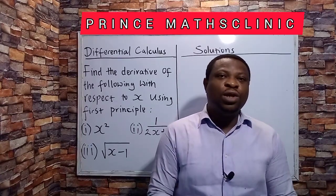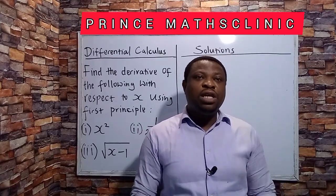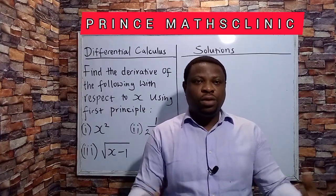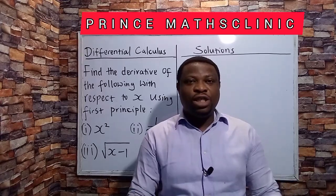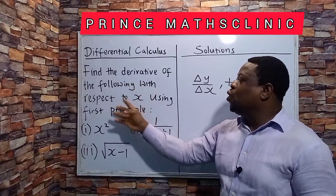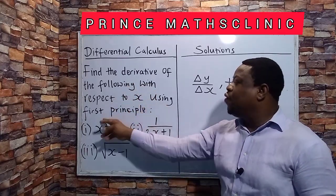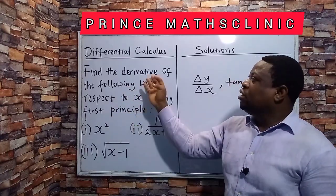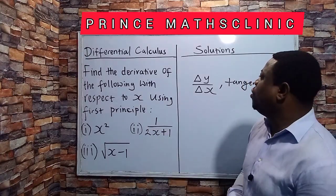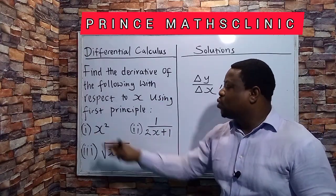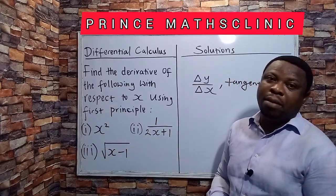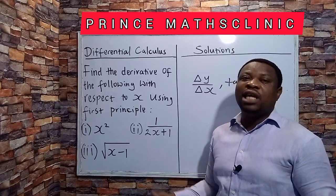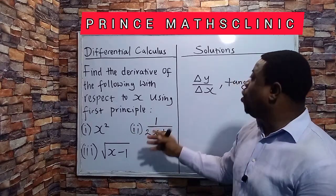When you say differential calculus, it simply means looking for slope. Slope could also mean changing y over changing x. We are asked to find the derivative of the following with respect to x using first principle. Derivative simply means to differentiate. So we are given x squared, 1 over 2x plus 1, and square root of x minus 1.